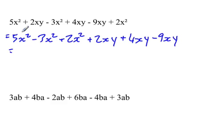And what we're going to do, so if we add all our positives together, we have 5 plus 2 is 7, subtract 3 is 4. So this will be 4x squared.